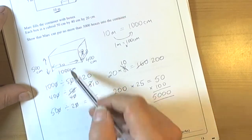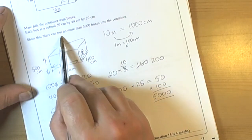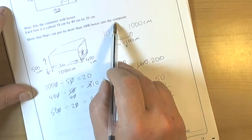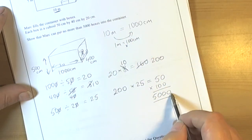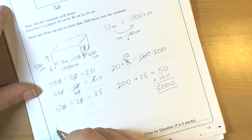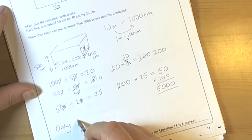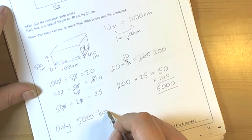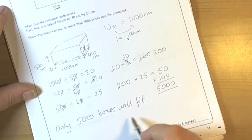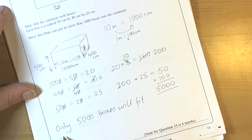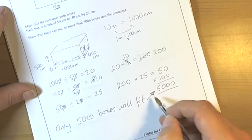What we've shown is, because the question said show that Mark can put no more than five thousand boxes into the container, we found the maximum number of boxes is five thousand. So we can say only five thousand boxes will fit. A star question, so we really ought to be concluding with a sentence: only five thousand boxes will fit, and then we can do a little arrow to show where we got the number from.